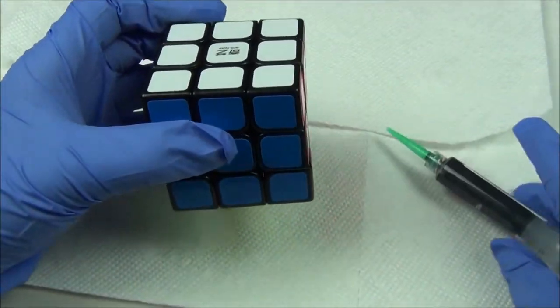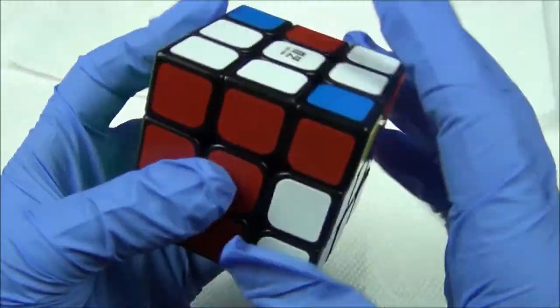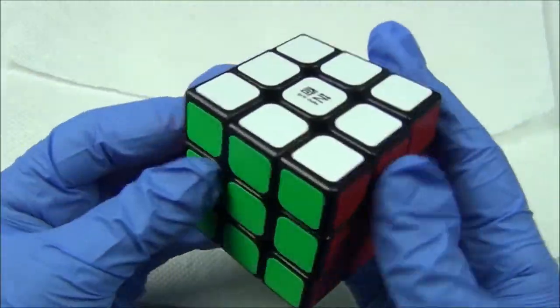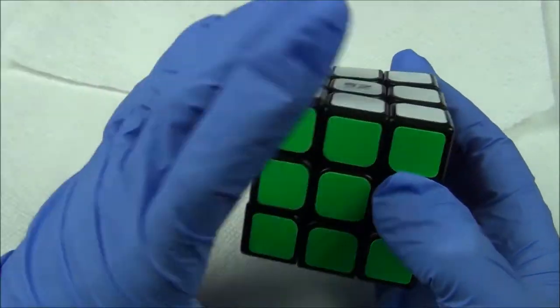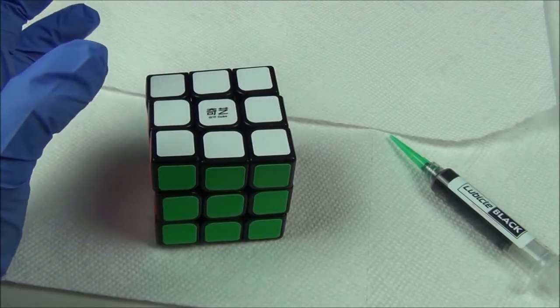Let's go ahead and start with the Qi Yi Sail. So this is a budget 3x3. Sorry I can't really turn it in gloves. And it performed very well for a budget 3x3, but it's also very sandy and kind of dry. So we're going to see how Lubical Black performs on it.